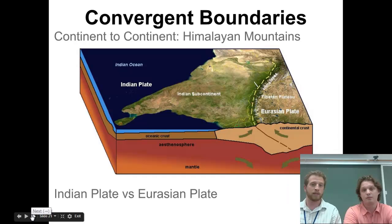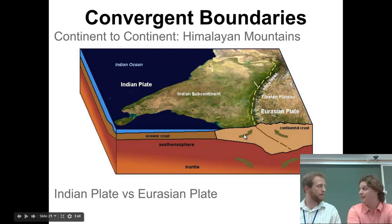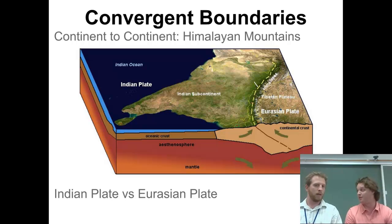The next example is continent to continent - two continental plates converging together. We have the Indian Plate colliding with the Eurasian Plate. India didn't used to be connected to Asia - it was way out in the Indian Ocean. It slowly moved up and got closer to Asia until eventually those two continents collided with each other.